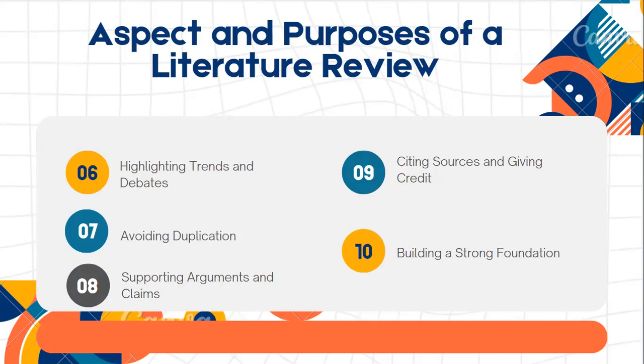Parang yun yata ang outline — dapat talagang unahin itong review of related literature kasi ang dami pala nating makukuha in reviewing literatures. Number seven is avoid duplication. By reviewing existing literatures, researcher can avoid duplicating previous studies. They can identify gaps in knowledge and research questions that have not yet been adequately addressed. Pero kung na-addressed na, wala nang bago sa gagawin mo.